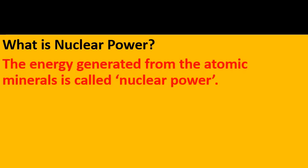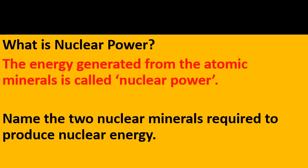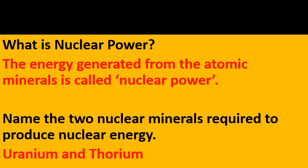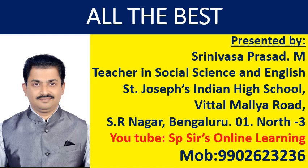What is nuclear power? The energy generated from atomic minerals is called nuclear power. Name the two nuclear minerals required to produce nuclear energy — uranium and thorium. So far we have discussed many questions and tables related to minerals in detail. All of these are very important from an examination point of view and these are the major questions of the lesson. I wish you all the best. Thank you.